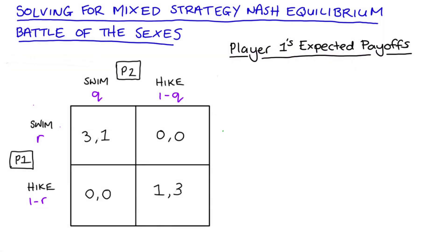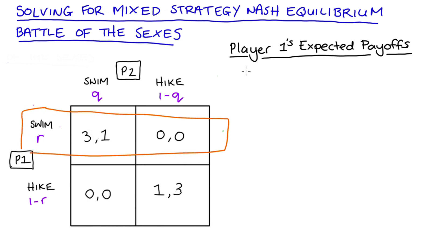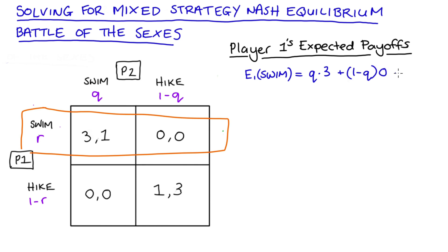For player one, let's think about the expected payoff of playing swim — that's the top row of our table. The expected payoff of player one playing swim is: with probability q, player two also plays swim so player one gets three, and with probability one minus q, player two plays hike so player one gets zero. Simplifying: the zero cancels the one minus q term, so the expected payoff of playing swim for player one equals 3q.